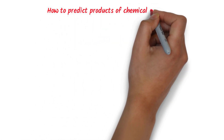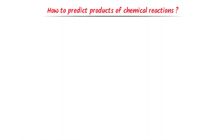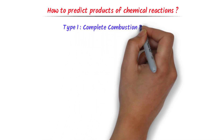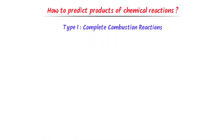How to predict products of chemical reactions? Consider the first type: reactions which we call complete combustion reactions.